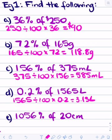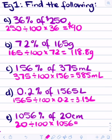Last one: 1056% of 20 centimeters. This is going to be a lot bigger than the original amount because you're doing 1056%. Same thing — use the unitary method: 20 divided by 100 times by 1056. That gives us 211.2 centimeters. So we use the unitary method to find a percent of a quantity.